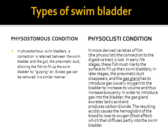Examples of physostomous fishes include bichirs, gars, trout, herrings, catfish, and lungfishes. These are fishes that have a pneumatic duct connecting the gas bladder to the alimentary canal, allowing the gas bladder to be filled or emptied via the mouth.